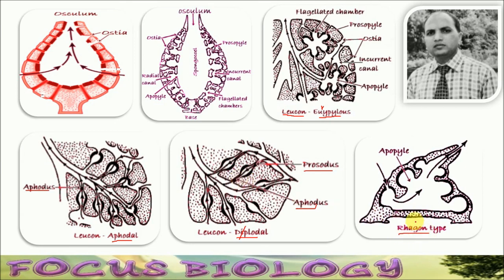In Rhagon type, its body is tent-like and the osculum is somewhat tapered. Choanocytes are confined only to the oval chambers — here, this area is not lined by flagellated cells, but this oval chamber is lined by flagellated cells. And this one is a sponge cell.